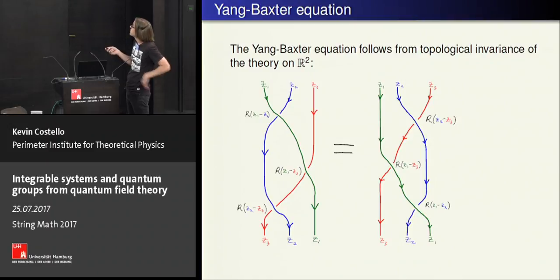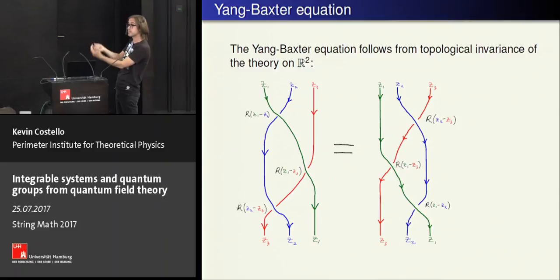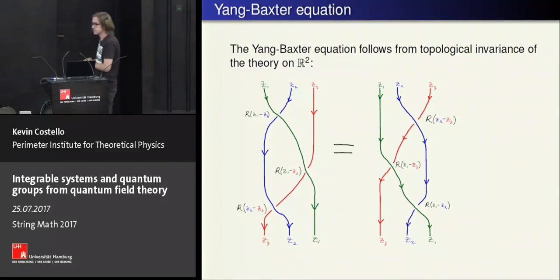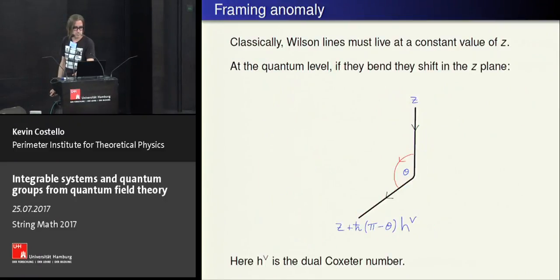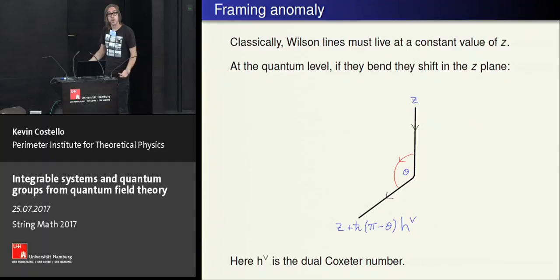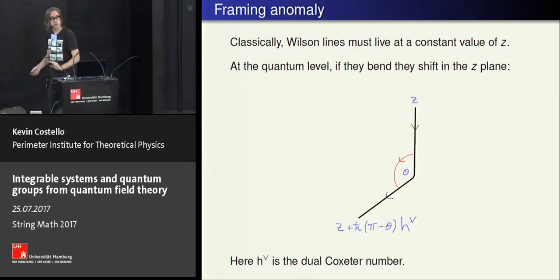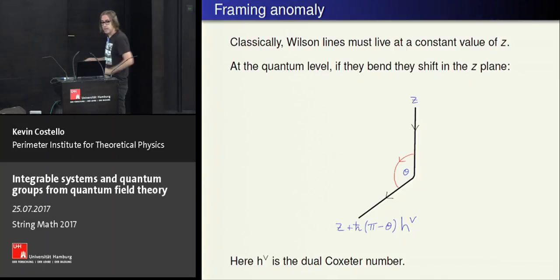All we do is draw three Wilson lines and slide them around in the topological plane. Since they're far away from each other in the z-plane, the Yang-Baxter equation is manifest. Now there's an extra subtlety: the theory is actually a framed TFT in this topological plane, and I'm drawing this subtlety because it will be important later.